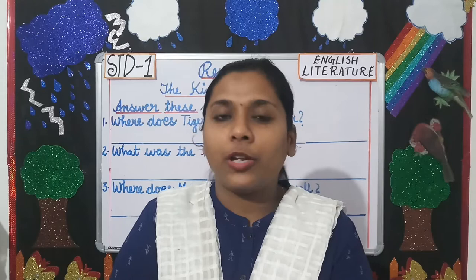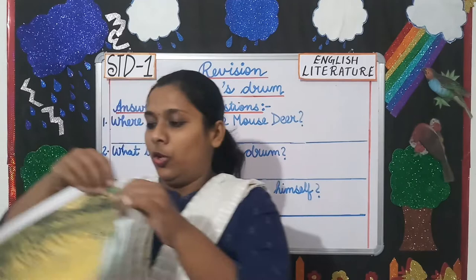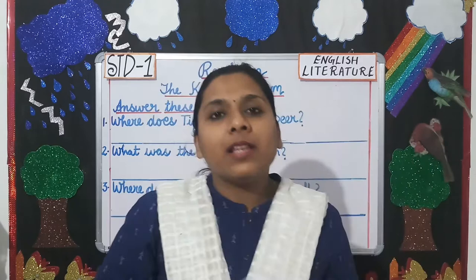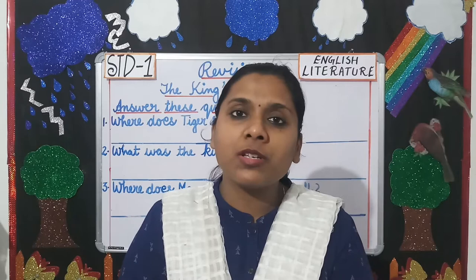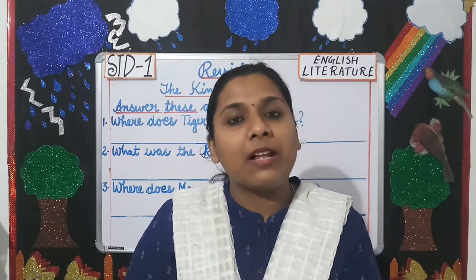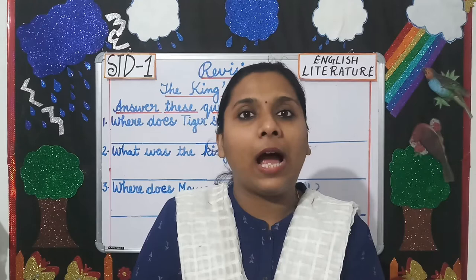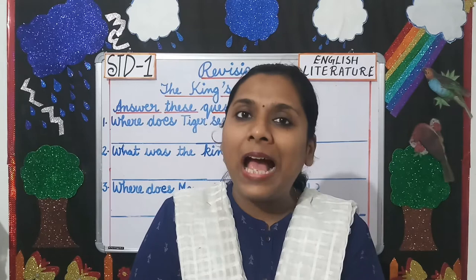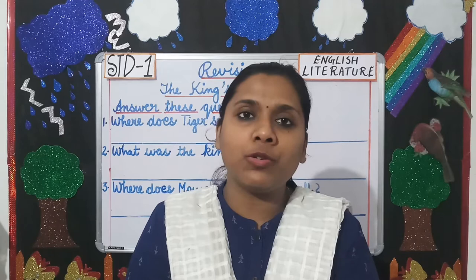Now, what's a beehive, students? Do you all know? Look at this picture — this is a beehive. In this chapter, there was a tiger who was very hungry and he wanted to eat the mouse deer. The mouse deer wanted to save himself from the tiger, so he thinks of an idea. He sees a beehive above him and tells the tiger that it was the king's drum, and the king does not want anyone to touch that king's drum.